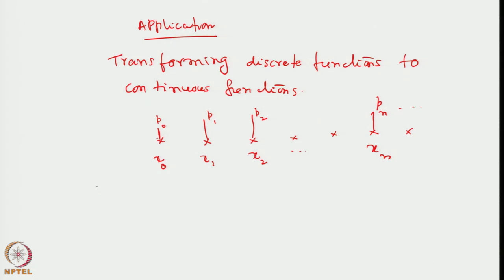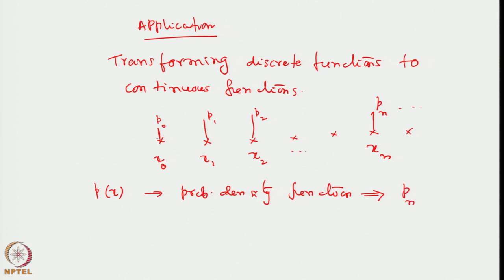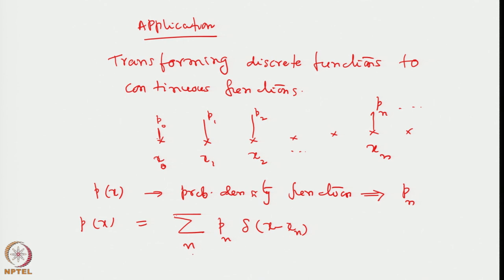We can illustrate that point by saying that if I define P(x) as my probability density function, which is a continuous representation of Pn — the index n being now replaced by a continuous variable x — it is possible to do it by defining a delta function in the form: sum over all n of Pn multiplied by the delta function with a shifted argument (x minus xn), summed over all lattice points. That defines the probability density function, which is now continuous.